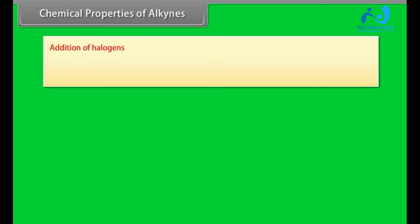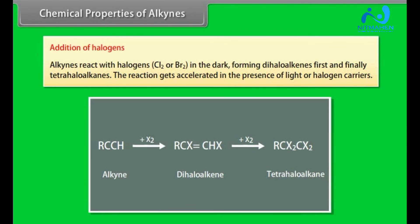Addition of halogens: Alkynes react with halogens, Cl2 or Br2, in the dark, forming dihaloalkenes first and finally tetrahaloalkanes. The reaction gets accelerated in the presence of light or halogen carriers.